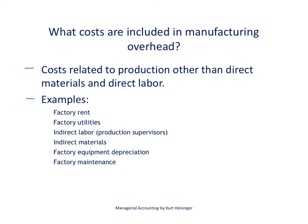This is Kurt Heisinger, accounting professor at Sierra College and author of Managerial Accounting. This video describes the nature of manufacturing overhead costs and how manufacturing overhead costs are applied to individual jobs in a job costing setting. We will continue to use the custom furniture company example, a company that manufactures custom wood tables both for individuals and organizations — things like coffee tables, dining room tables, and boardroom and meeting room tables.